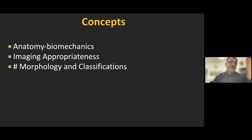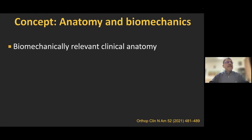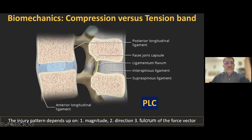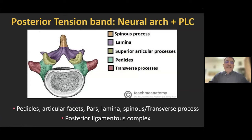We'll cover three important concept areas: anatomy and biomechanics, imaging appropriateness in spine trauma, and fracture morphology classification. The motion segment is the basic functional unit of the spine. The spinal column can be divided into anterior and posterior columns. The anterior column is the vertebral body, ALL, the disc, and the PLL. The posterior column is the neural arch and all ligaments connecting it, called the posterior ligamentous complex. The posterior tension band consists of the neural arch bony structures — pedicles, superior and inferior articular facets, lamina, spinous process, facet joints, and transverse processes.